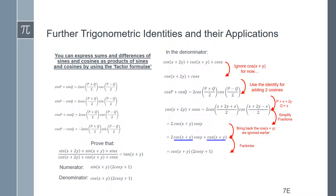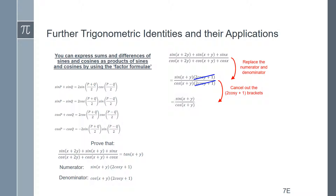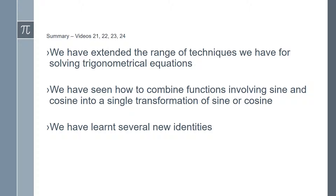Now rewriting using our factorised numerator and denominator, we can see that the (2 cos y + 1) brackets cancel out. We are left with sine(x+y) / cos(x+y), which is just tan(x+y). So in the last four videos — 21, 22, 23, and 24 — we've extended the range of techniques for solving trig equations, seen how to combine functions involving sine and cosine into a single transformation, and learned several new identities.